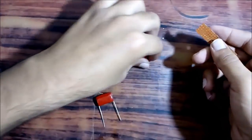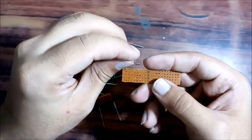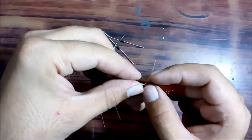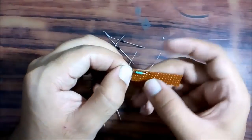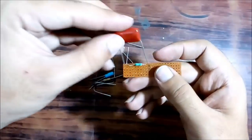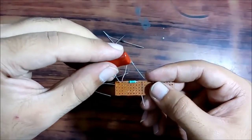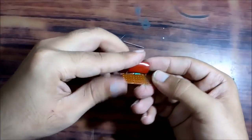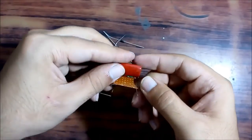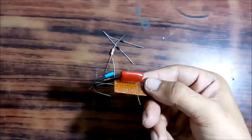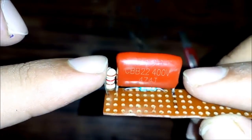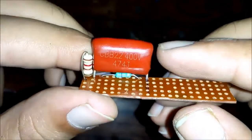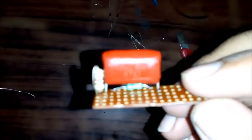So these are the components and let's start them arranging on the general purpose PCB. Now I have soldered the capacitor, this resistor, and this resistor. Now I will solder the remaining components and I will show you the fully soldered PCB.